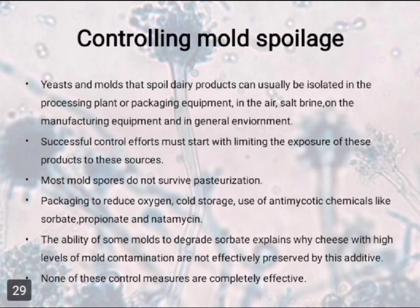Controlling mold spoilage: yeast and mold that spoil dairy products can usually be isolated in processing plants or packaging equipment, in the air, soil, plants, on manufacturing equipment, and in the general environment. Successful control efforts must start with limiting the exposure of these products to the source. Most mold spores do not survive pasteurization. Packaging to reduce oxygen, cold storage, and use of active mycostatic chemicals like sorbate, propanoate, and natamycin are used. The ability of some molds to degrade sorbate explains why cheese with high levels of mold contamination is not effectively preserved by this additive. None of these controls are completely effective.